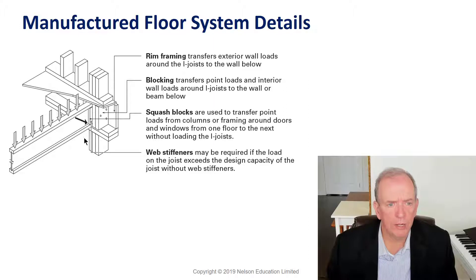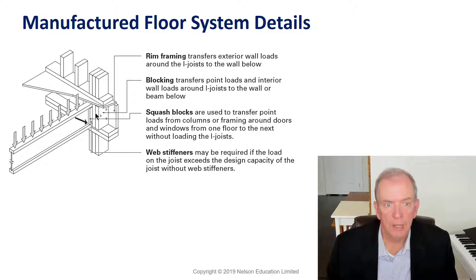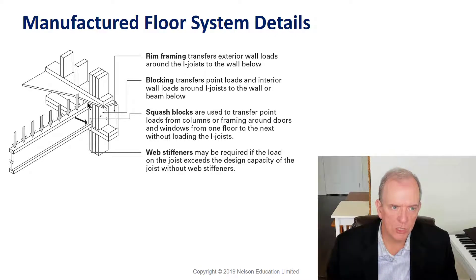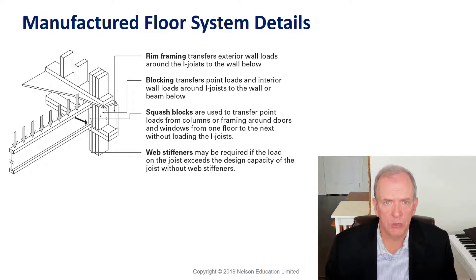The system — and I can only speak in generalities because it depends on the specific system — may require squash blocks in the webs and between the plates. Squash blocks are needed because these joists aren't strong enough on their own to carry the weight of a load-bearing wall coming down on them. If you have a load-bearing wall above the connection points, it has to be strengthened and supported. You might need a single block on each side, or web stiffeners in between — it changes. You always have to look at the shop drawing provided and follow their requirements exactly. You can't just say you know how to do it and do your own thing.